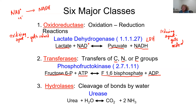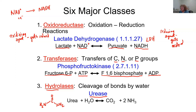Next are hydrolases. From the prefix 'hydro,' water is involved; 'lase' implies some sort of cleavage. The enzyme urease takes urea and water and produces CO2 and two molecules of NH3. Urea is hydrolyzed using water — one hydrogen and oxygen from water are incorporated — yielding two ammonia molecules and carbon dioxide. Essentially, any reaction where water is used to break a bond is a hydrolase reaction.